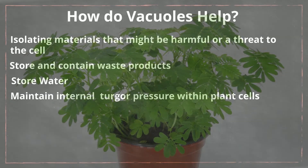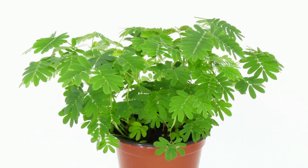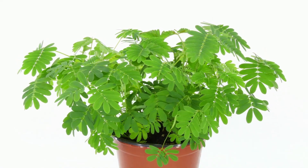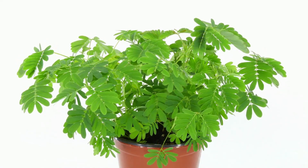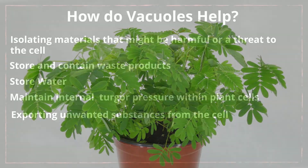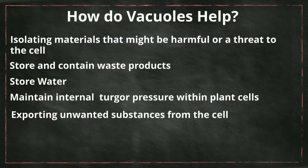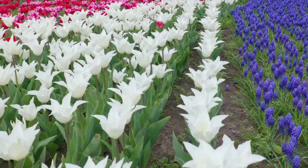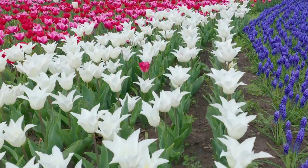Vacuoles also maintain internal turgor pressure for plant cells. The turgor pressure is the force that pushes the cell membrane against the cell wall. If you have seen a plant wilt, the turgor pressure is very low. Vacuoles also play a role in exporting unwanted substances from the cell. The central vacuole in plant cells allows the plant to support structures such as leaves and flowers due to the turgor pressure of the central vacuole.